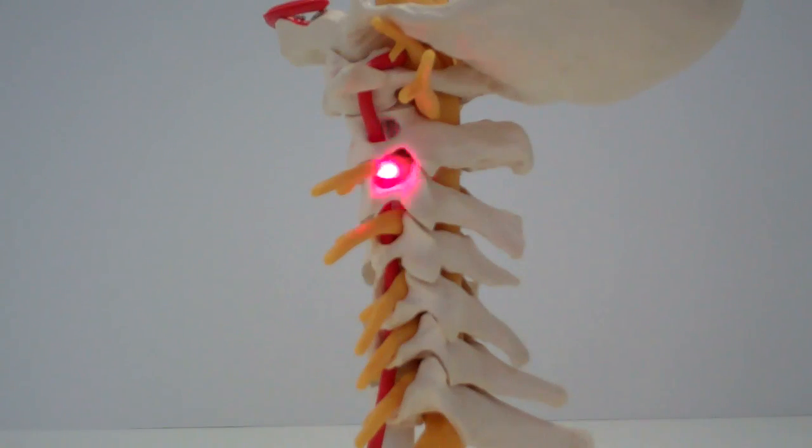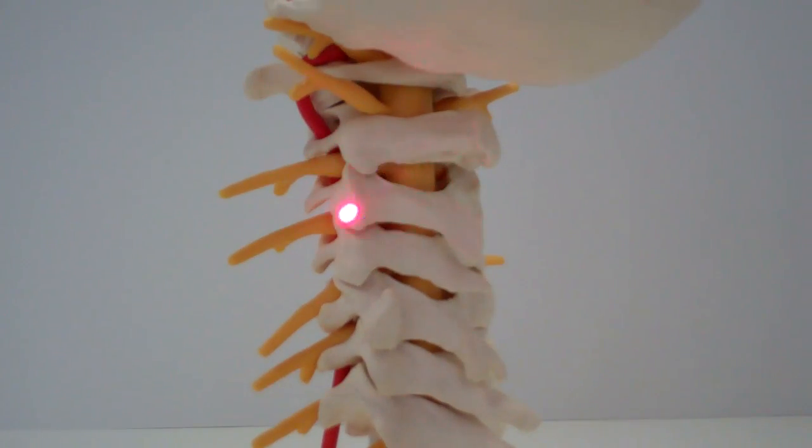Then this little foramen, this little hole that the nerve uses to get out of your spine sits in front of another little pair of joints over here on the side. You see that little pair of joints over here on the side?